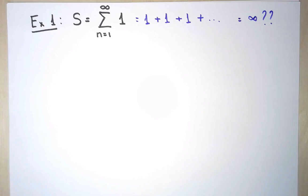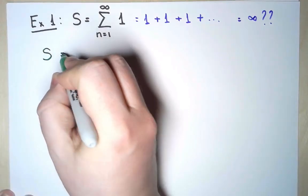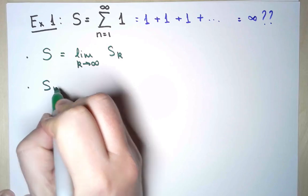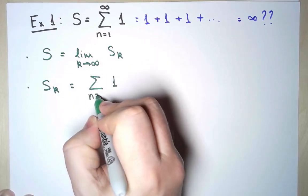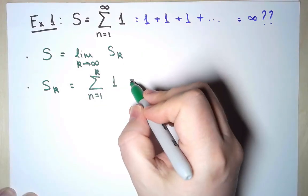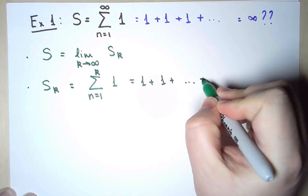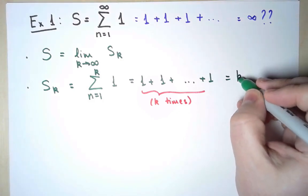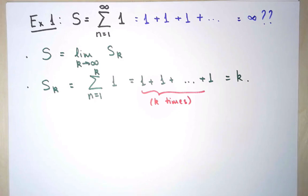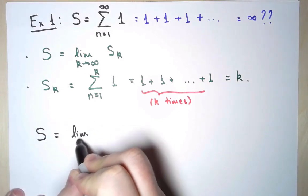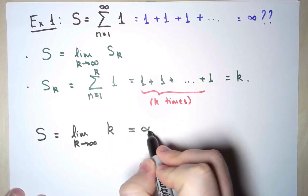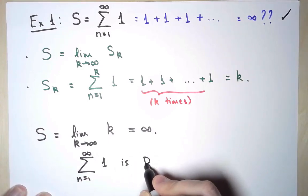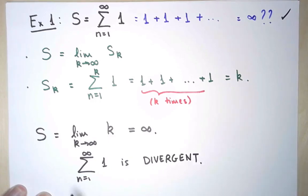Otherwise, we have the wrong definition. The definition of series, or infinite sums, says that the full sum should be the limit of partial sums. The kth partial sum is defined as the same sum but where the index stops at k. So what could this be? Well, this is the sum of k terms, and all the terms are 1, so sk is simply k. This is probably the easiest series calculation you will ever do. Therefore, the value of the full sum is the limit as k approaches infinity of sk, which is k — in other words, infinity. The original series is divergent, because the limit of partial sums does not exist.